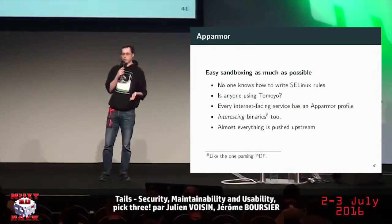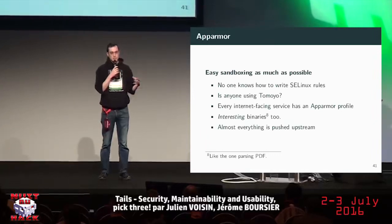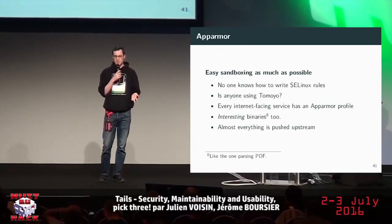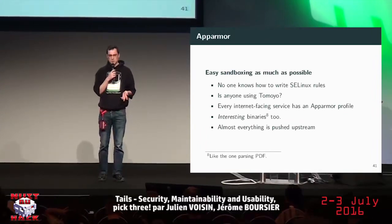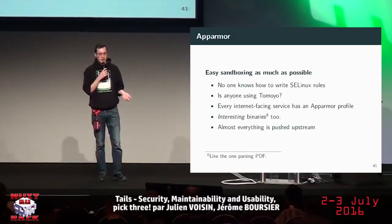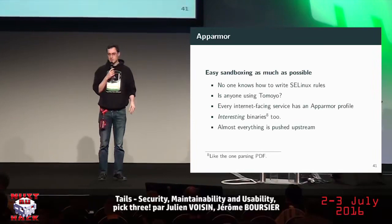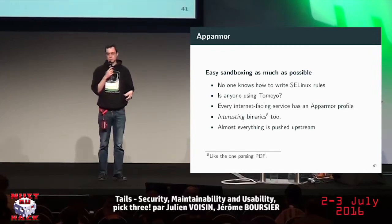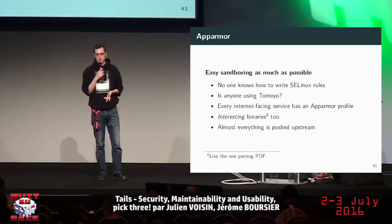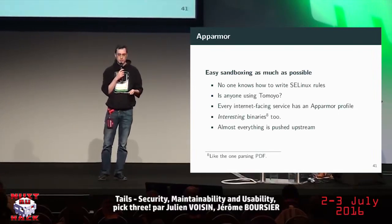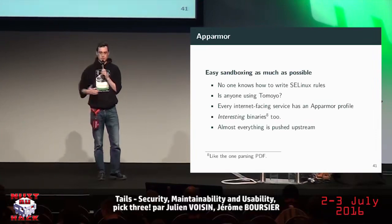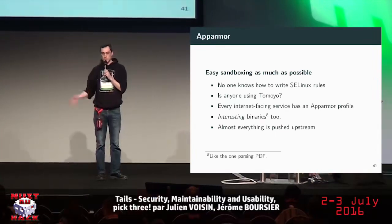AppArmor — maybe some of you know it — is a sandboxing mechanism. No one really knows how to write AppArmor rules. AppArmor is not widely used, but every internet-facing service or binary in Tails has an AppArmor profile — it's completely sandboxed. For example, if you manage to pop a shell in Pidgin, you won't have access to your GPG keys. Almost everything is pushed upstream, though with some differences since Tails and Debian have different threat models.